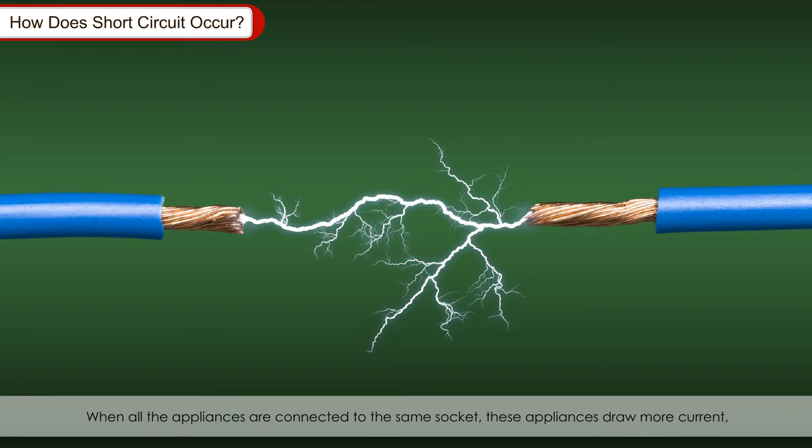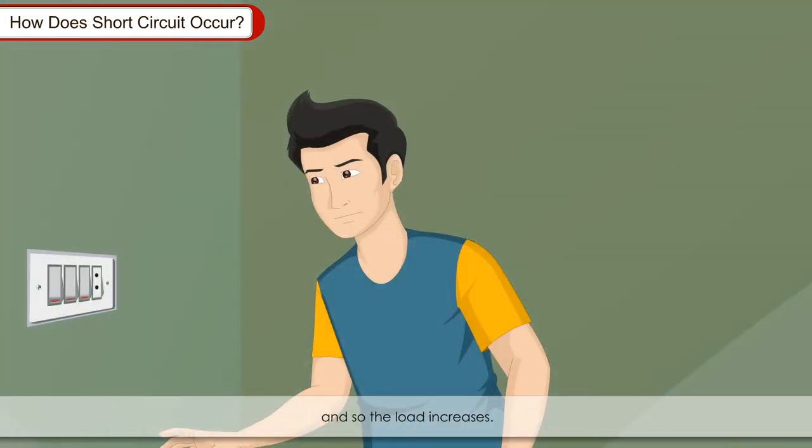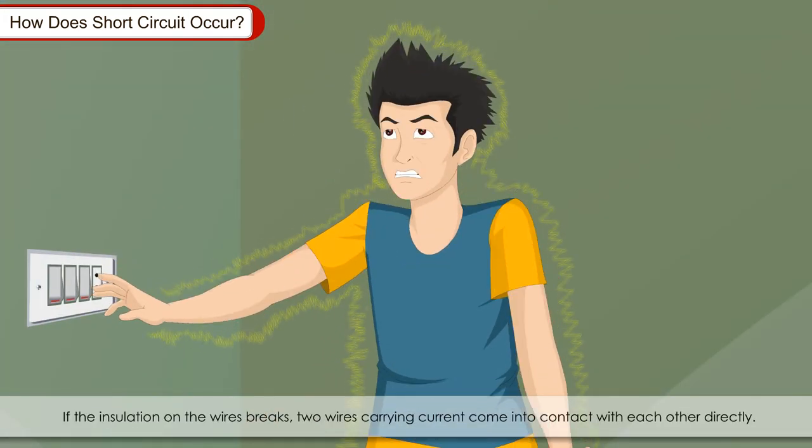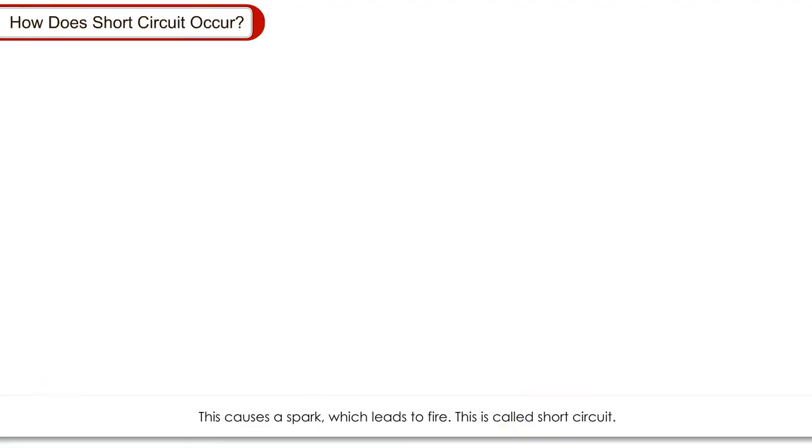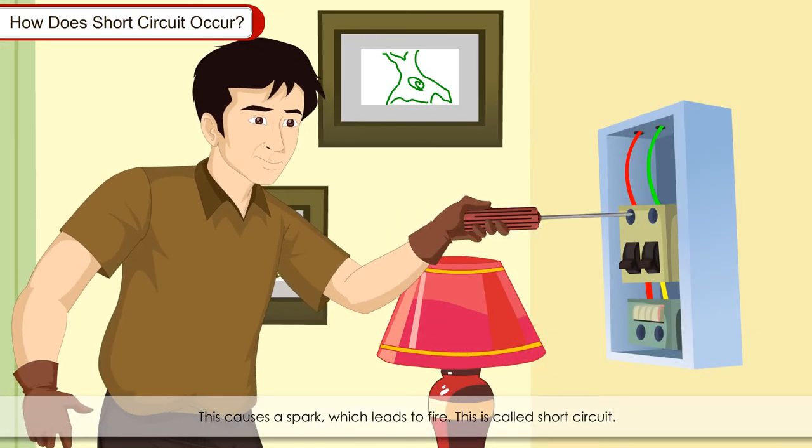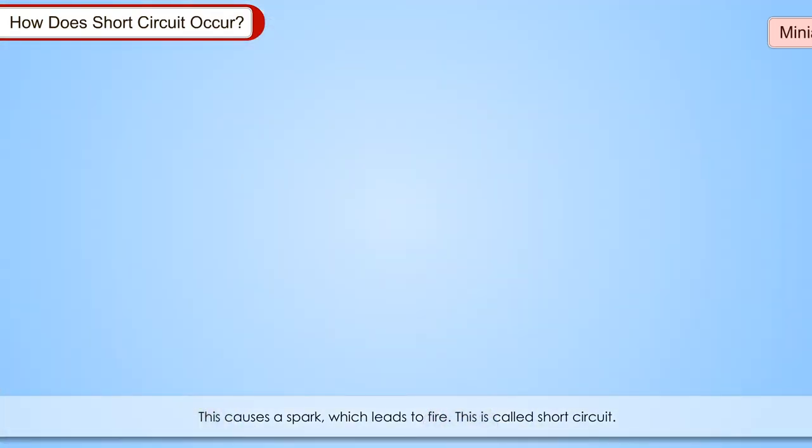How does short circuit occur? When all the appliances are connected to the same socket, these appliances draw more current and so the load increases. If the insulation on the wires breaks, two wires carrying the current come into contact with each other directly. This causes a spark which leads to fire. This is called short circuit.